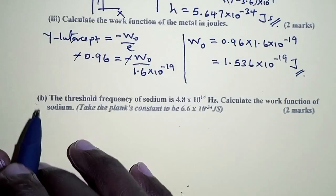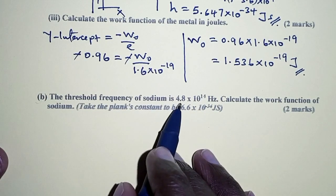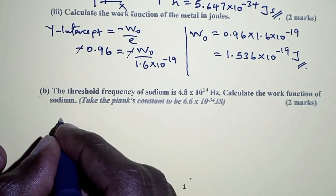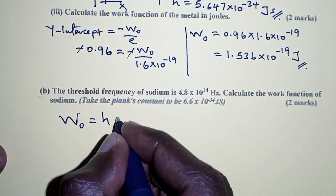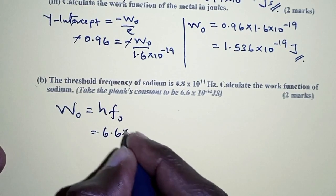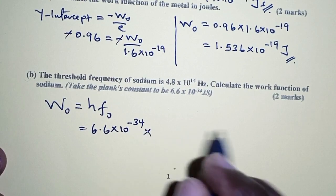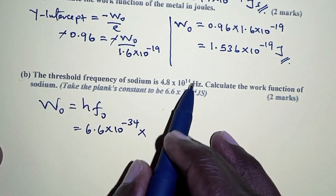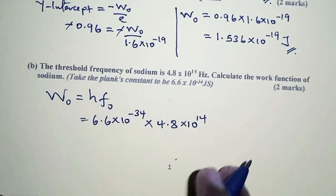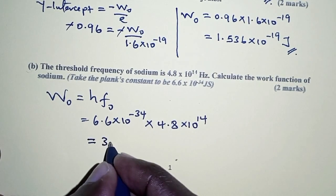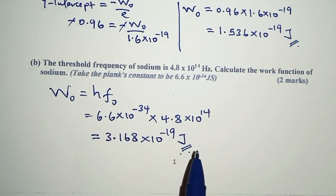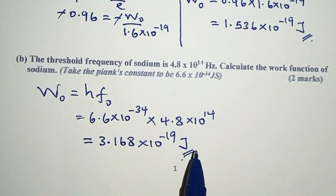Part B: the threshold frequency of sodium is 4.8 times 10 to the power 14 Hz. Calculate the work function of sodium. The work function equals Planck's constant times the threshold frequency. With Planck's constant given as 6.6 times 10 to the power negative 34 joule-seconds, multiplying by 4.8 times 10 to the power 14 Hz gives 3.168 times 10 to the power negative 19 joules. And with this, we mark the end of the solution to this problem. Thank you for watching. See you next time.